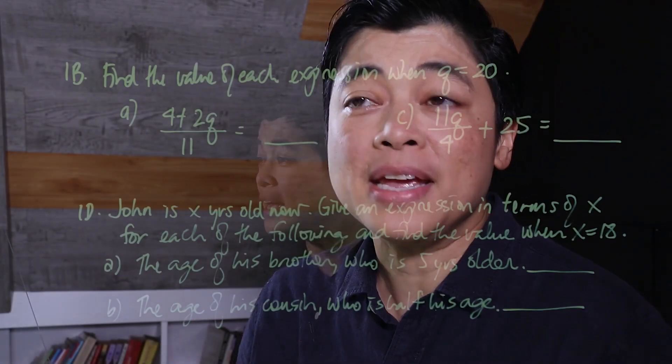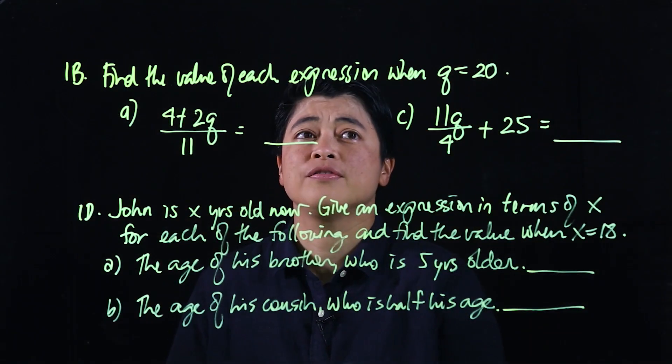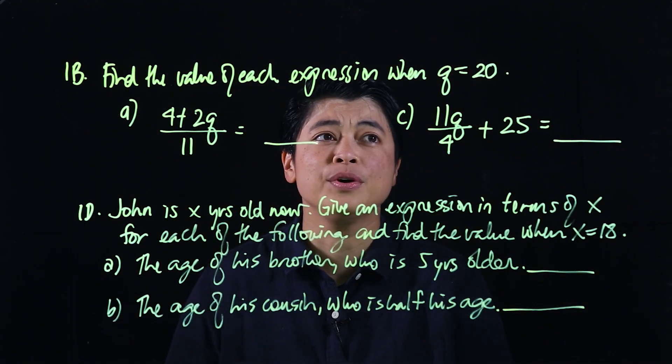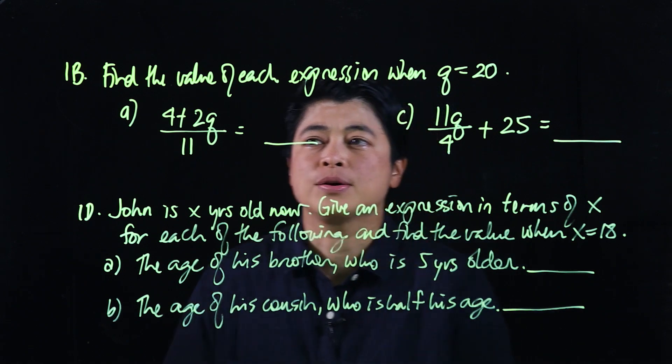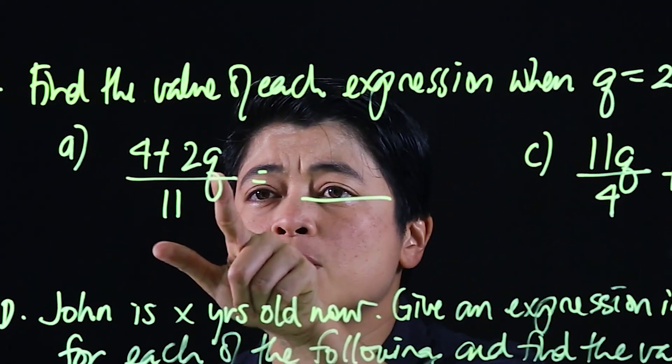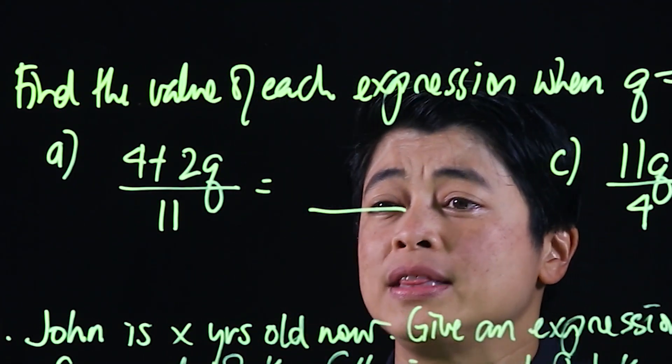So let's begin with problem 1b. It says find the value of each expression when q is 20. So that means wherever you see a q, we will replace with 20.